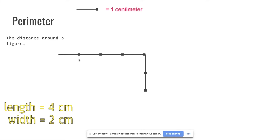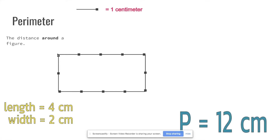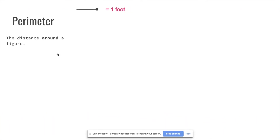Rectangles don't just have one side as the length and one side as the width — whatever is on one side is also on the opposite side. So we count: one, two, three, four centimeters again for the length, and one, two centimeters again for the width. So we're doing four plus two plus four plus two, which gives us a perimeter of twelve centimeters.